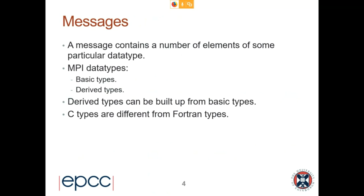A message in general contains some number of elements of some particular data type. For that reason, MPI defines its own set of data types. There are basic types — the sort of things you find in most languages — and there are derived types, which are essentially custom data types. For example, in C you could define a struct as a derived type built up from basic types. We're not going to cover derived types in this course.